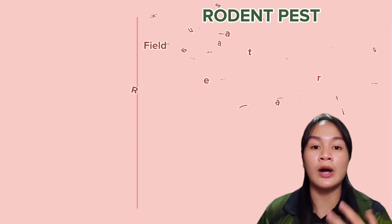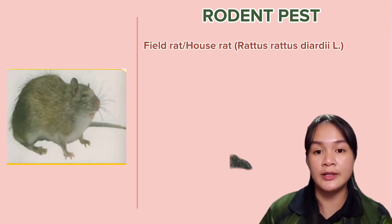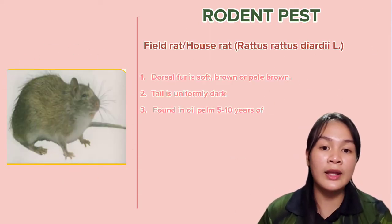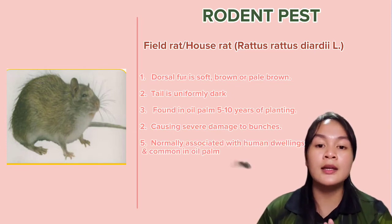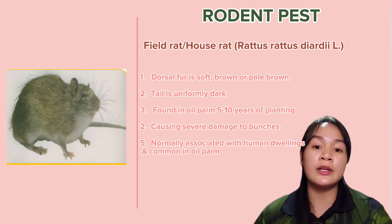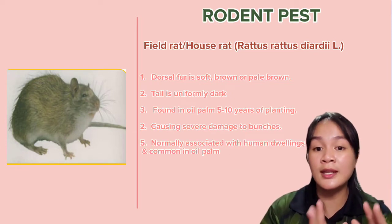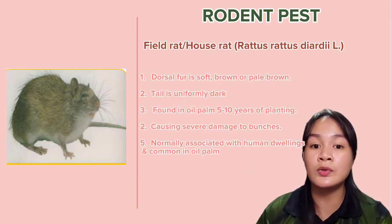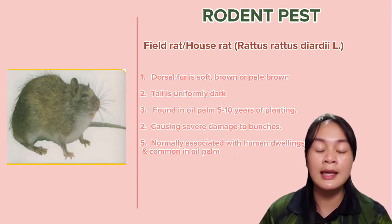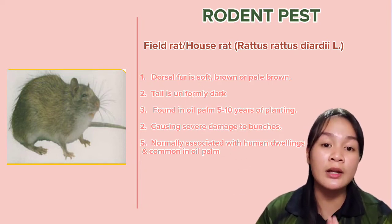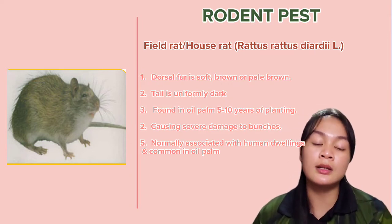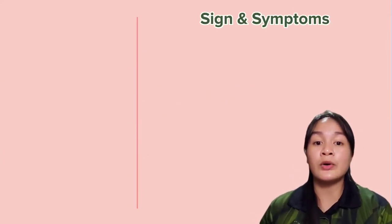The house rat or field rat has soft brown and pear-brown dorsal fur, with a uniformly dark tail. It is usually found in oil palm after five to ten years of planting, causing damage to the fruit bunches. It is normally associated with human dwellings and is common in oil palm plantations.